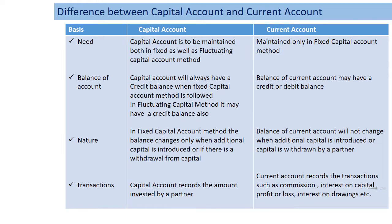In the case of the balance of the account, the capital account will always show a credit balance when the fixed capital method is followed. But in the case of the fluctuating capital method, it may have either a credit or debit balance because all the adjustments are done in that capital account. In the case of the current account, the balance may also have a credit or debit balance.